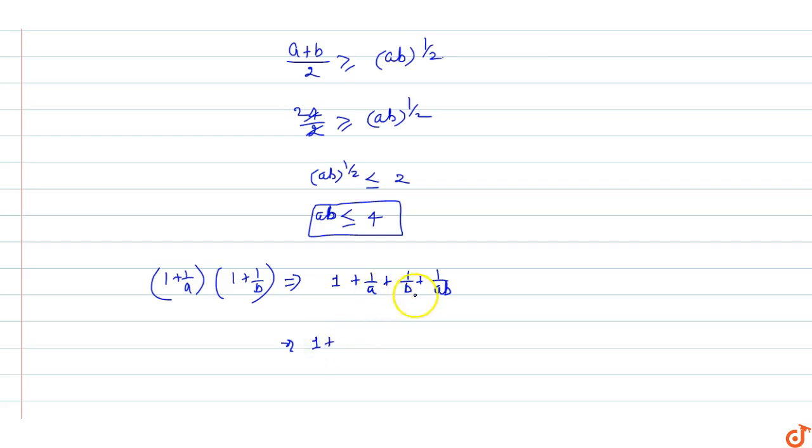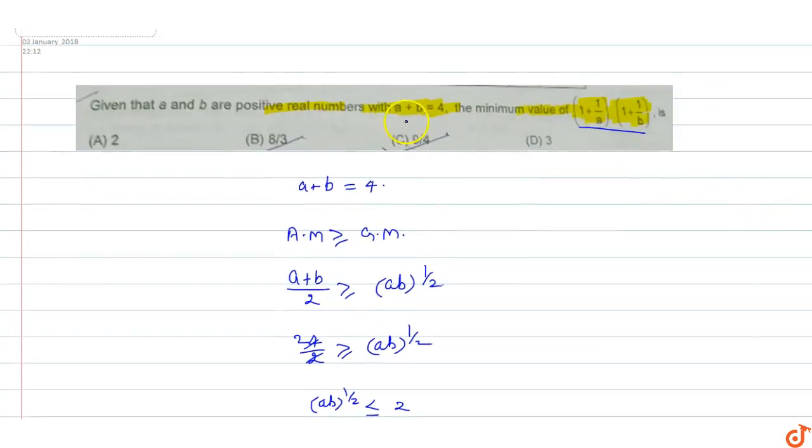This equals 1 plus (a + b)/ab plus 1 upon ab. Now we know that a plus b is given in the equation equal to 4.